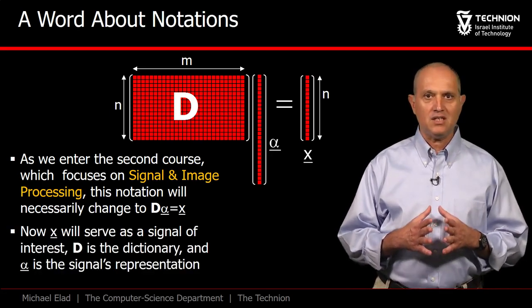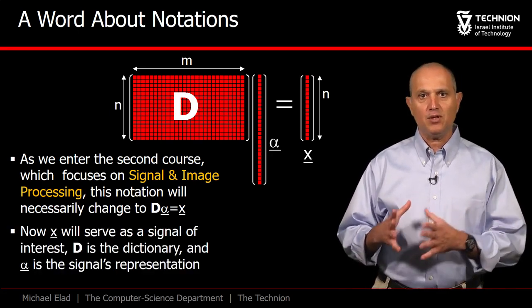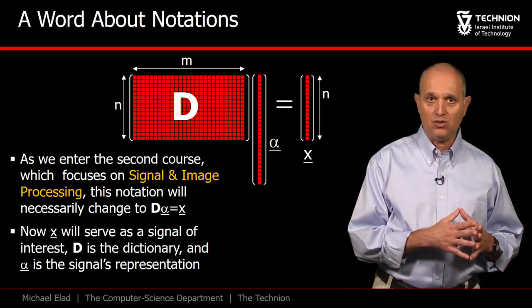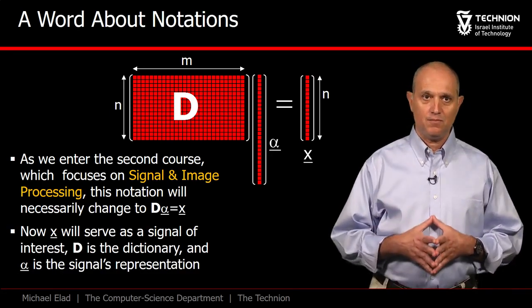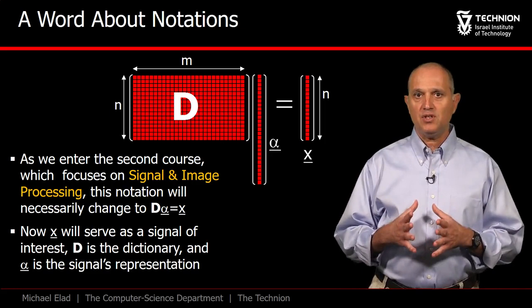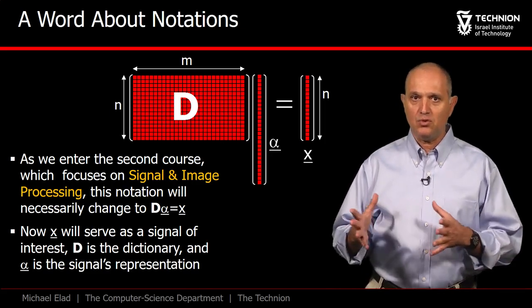In these new notations, x stands for a signal to be processed, α, the sparse vector, is its representation, and the matrix D serves as our dictionary, which ties the two together.